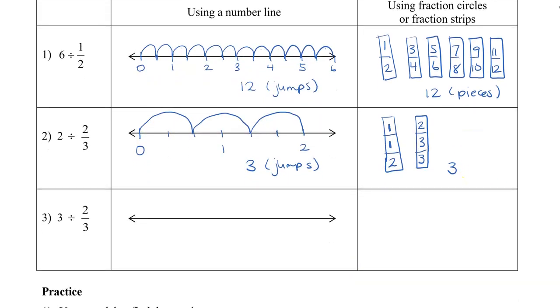All right, let's take a look at the last question. We have 3 divided by 2 thirds. So this time I'm going to divide my number line into 3 parts. And then for each, from 0 to 1, 1 to 2, and 2 to 3, because my denominator is 3, I'm going to divide this into thirds, just like I did for the second question. But the difference is that that one only went up to 2.